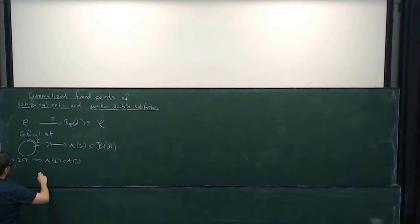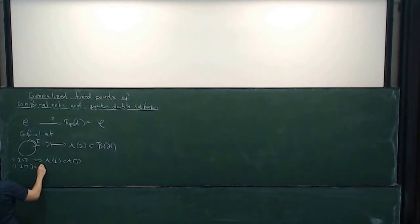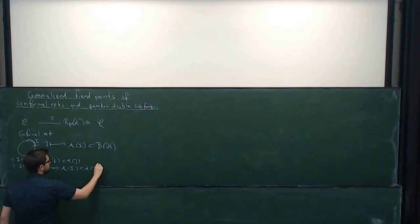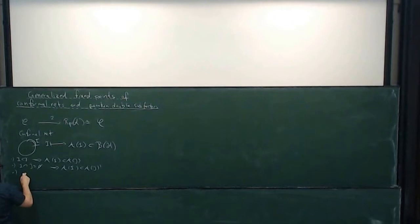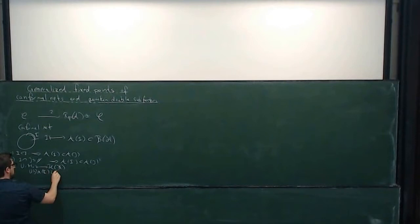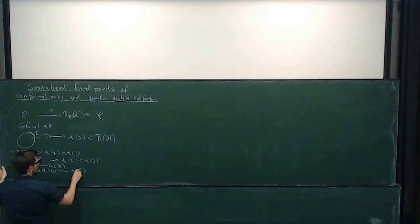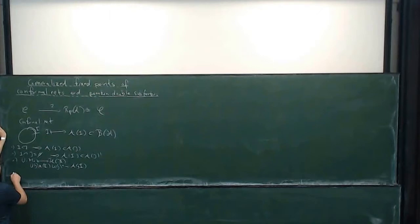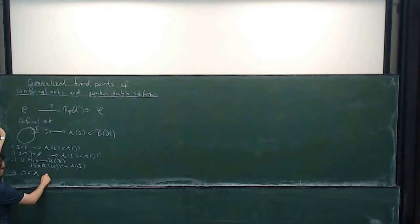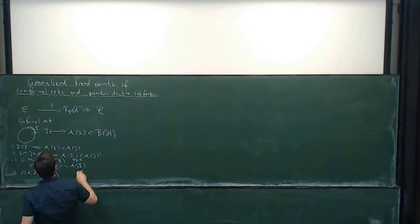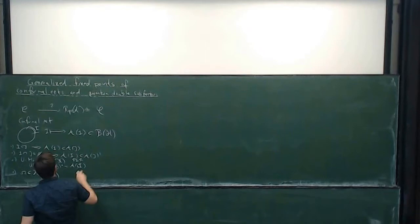There's also a locality axiom: if two intervals are disjoint, we want A(I) to be in the commutant of A(J). We want some covariance, which means there is a representation of at least the Möbius group of unitaries on the Hilbert space, making this covariant in the following sense: the Möbius group acts on the circle. There's a notion of a vacuum vector satisfying certain properties, and this should be essentially unique after a phase. This means the representation should be a positive energy representation — meaning rotation should have positive spectrum.